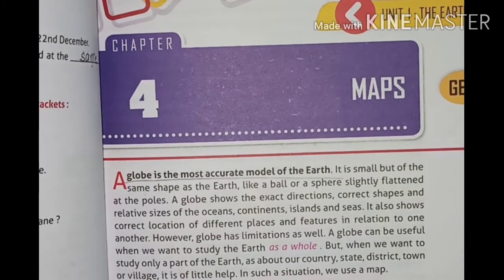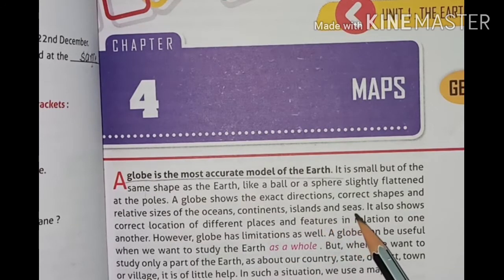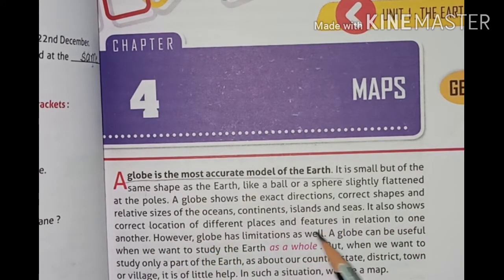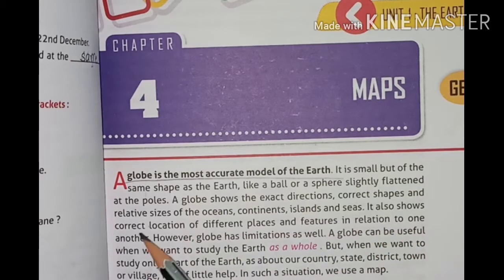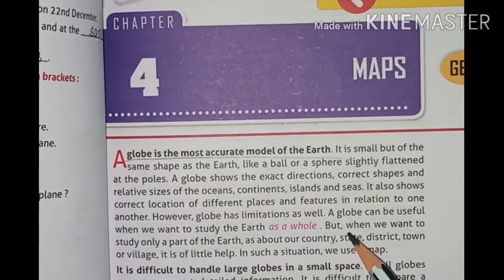A Globe shows the exact direction, correct shape and relative size of the ocean, continents, islands and sea. It also shows the correct location of different places and features in relation to one another. However, the Globe has limitations as well.